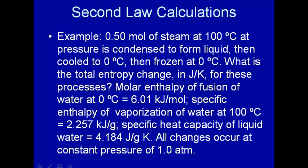Let's use these equations to do a few examples. Here we have 0.5 mol of steam at 100 degrees C — there's a little mistake here — which is condensed to form a liquid and then cooled to 0 degrees C and frozen at 0 degrees C. Let me say the condensation starts at 100 degrees C.